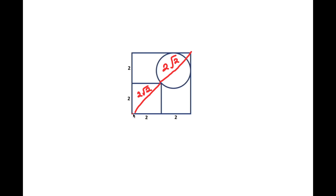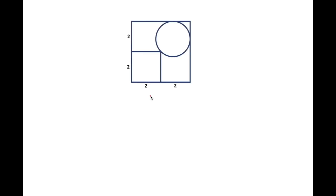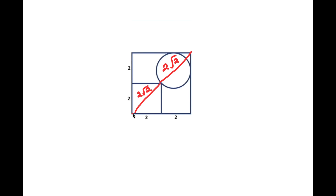What we want to do is find the radius of the circle. The radius is this length right here, and this is 2√2. This is also the radius from here to here, and same with this — this is also the radius. So we can say that this is R, and this length from here to here is the radius as well.